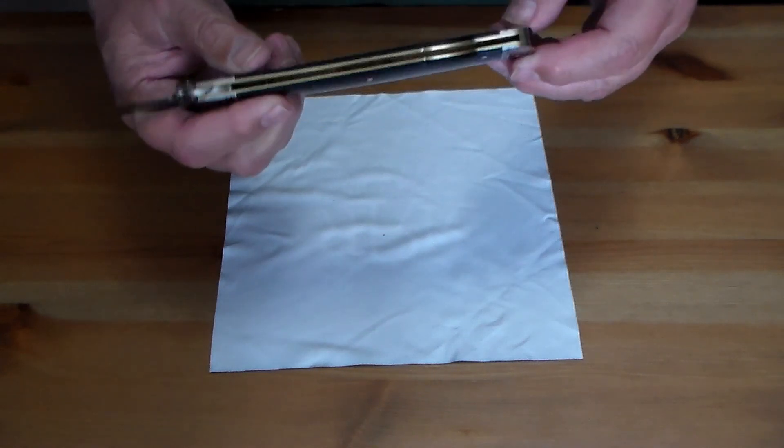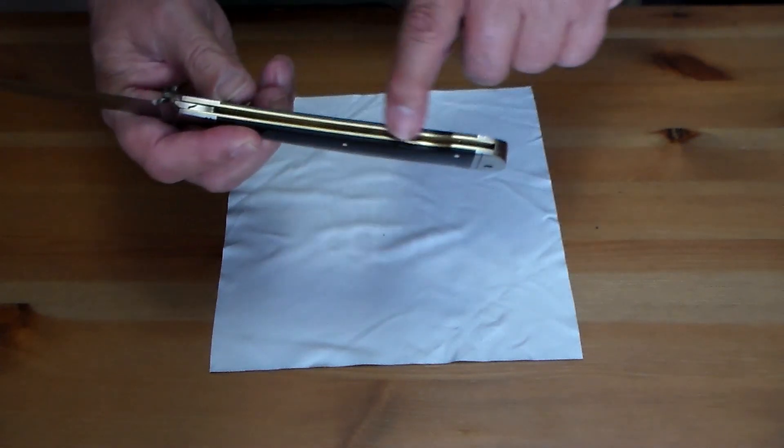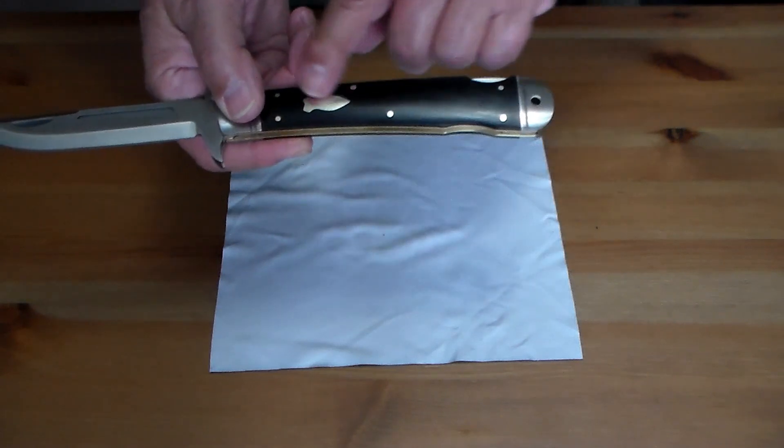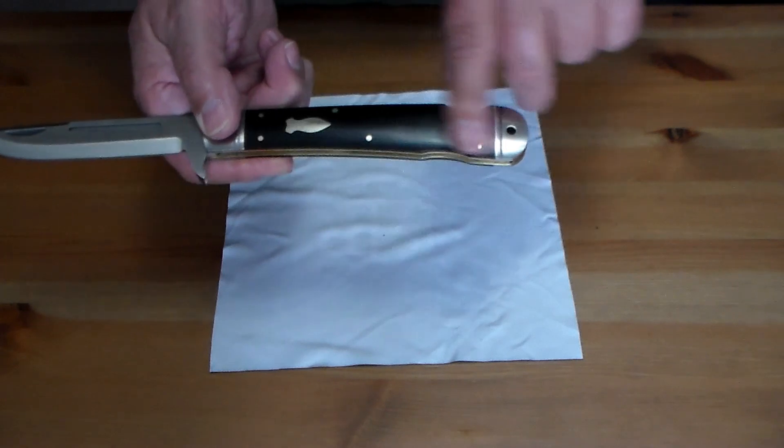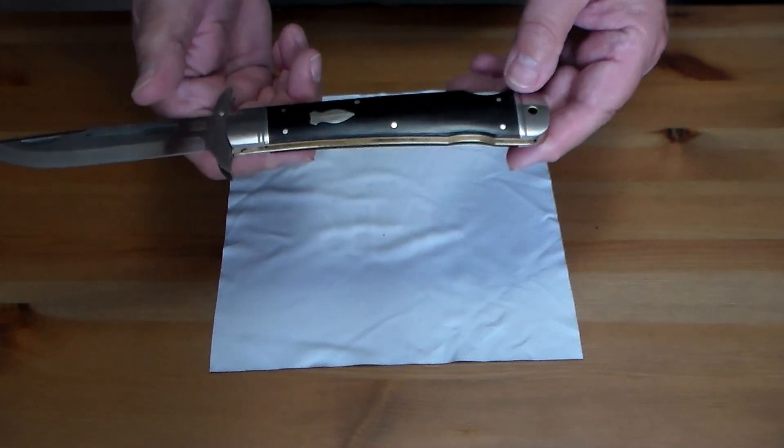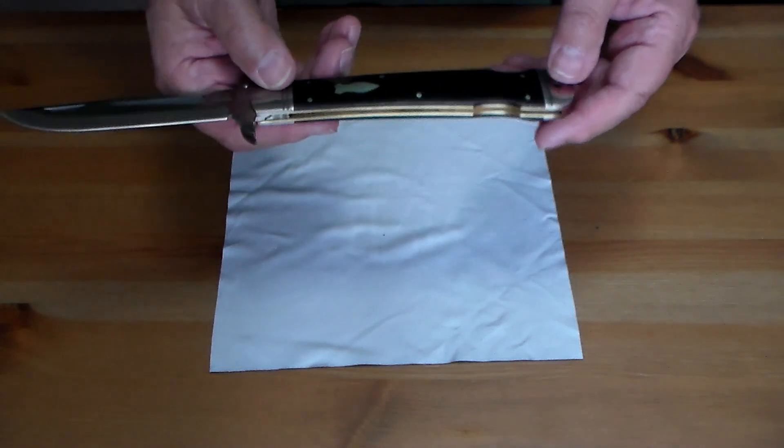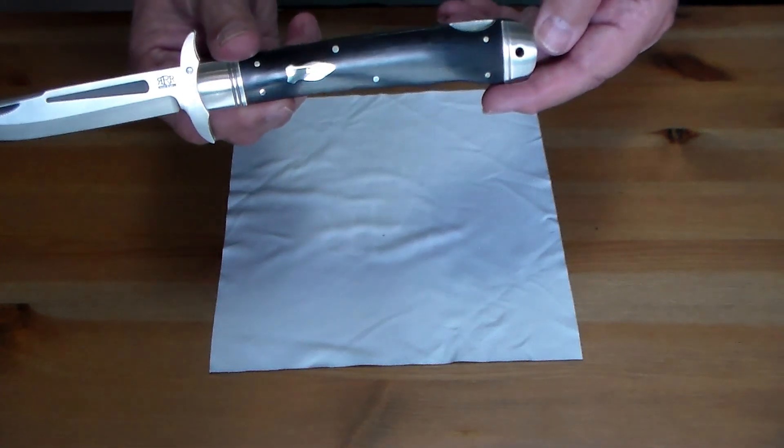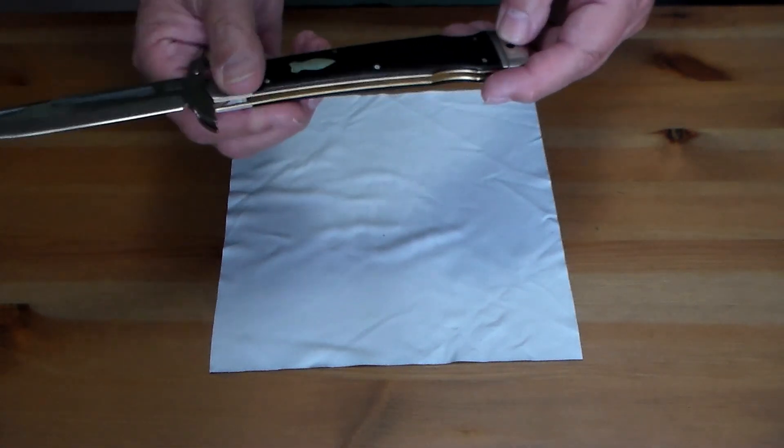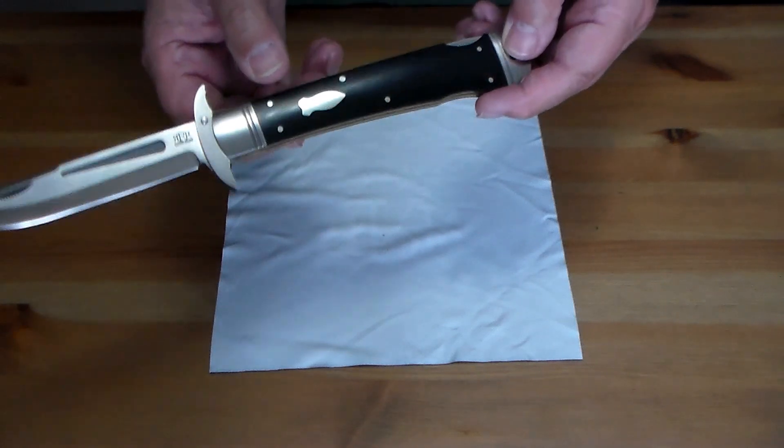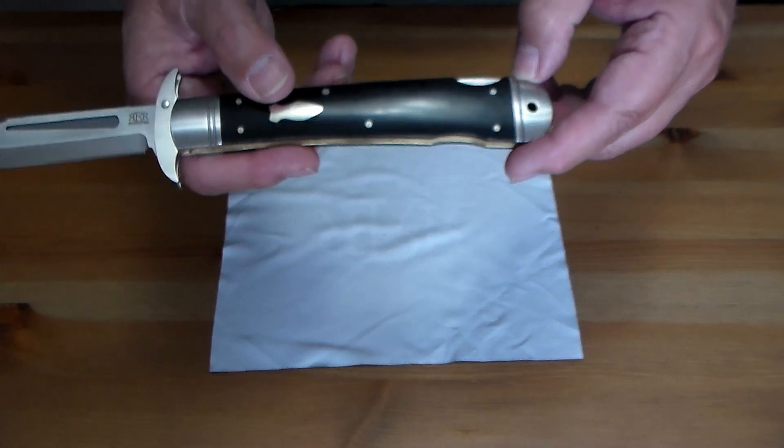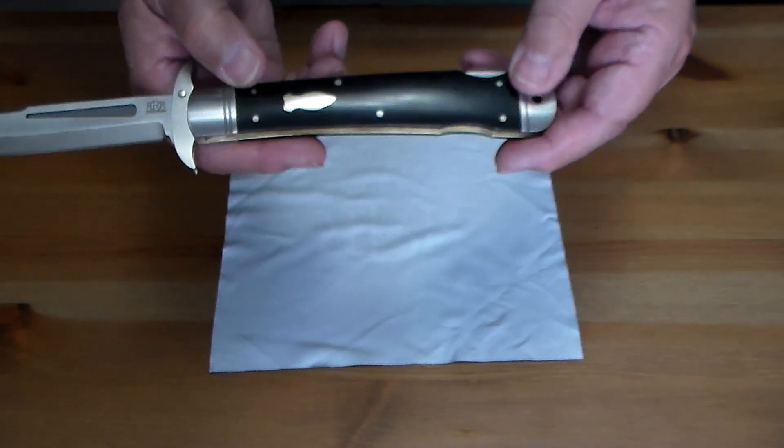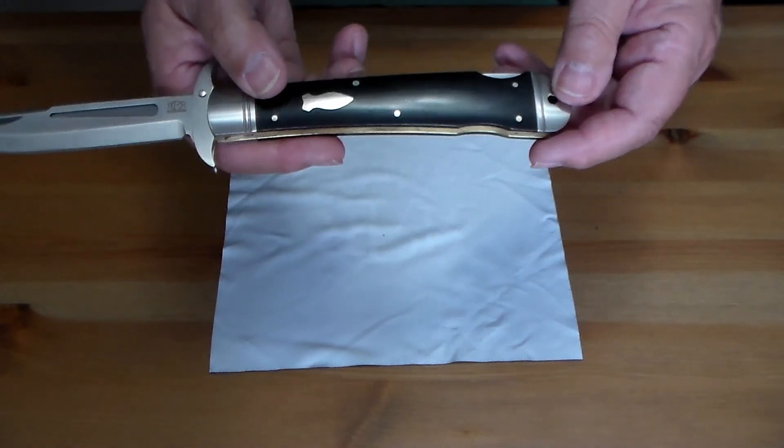Lanyard hole here, brass liners, as I said, black micarta scales, nickel silver pins with the nickel silver bomb shield, and stainless steel or steel bolsters with the groove cut into them - two at the one end and one at the other.